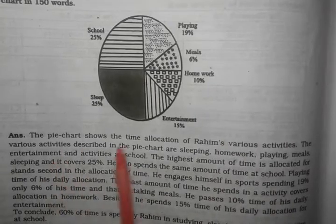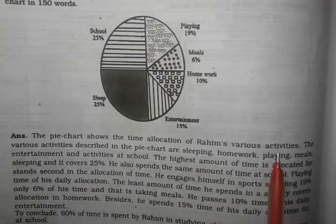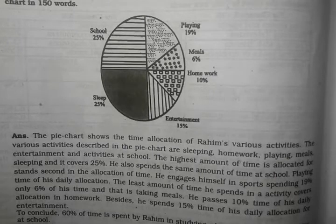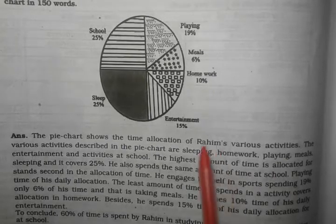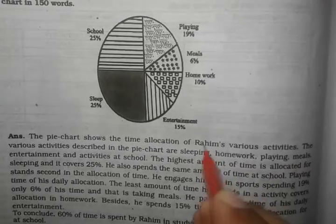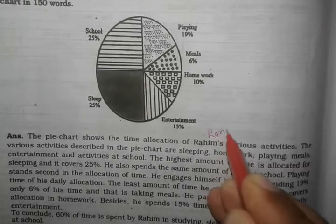The pie chart shows the time allocation of Rohim's various activities. So we can see how much time Rohim spends on each activity in his daily life.